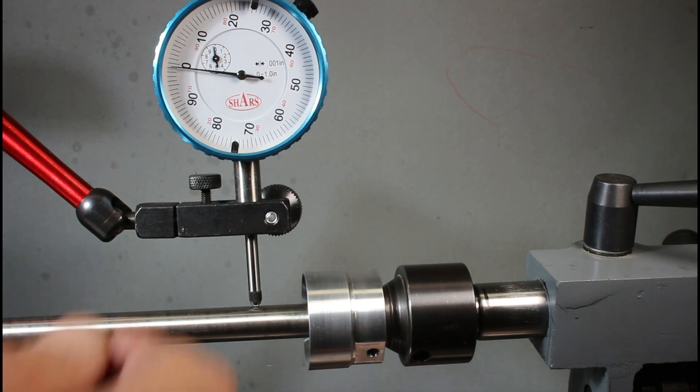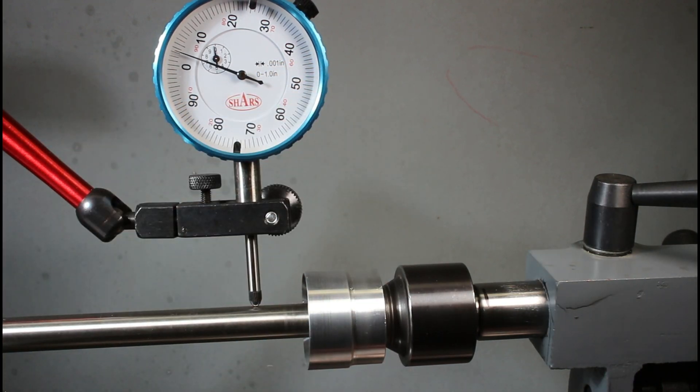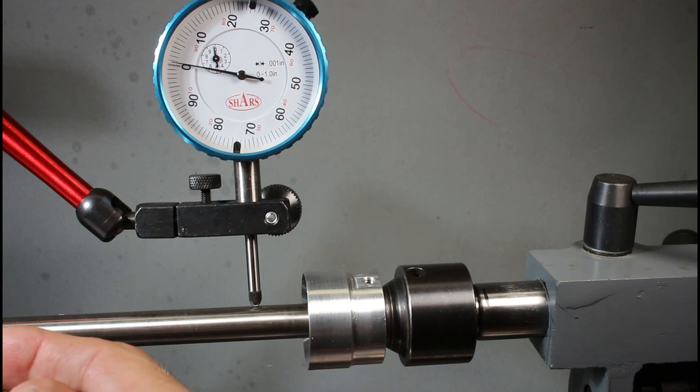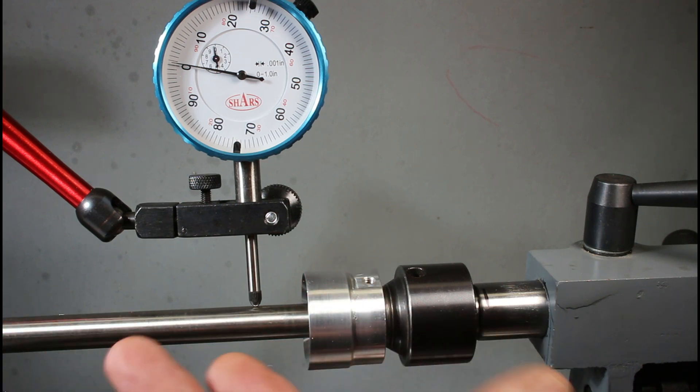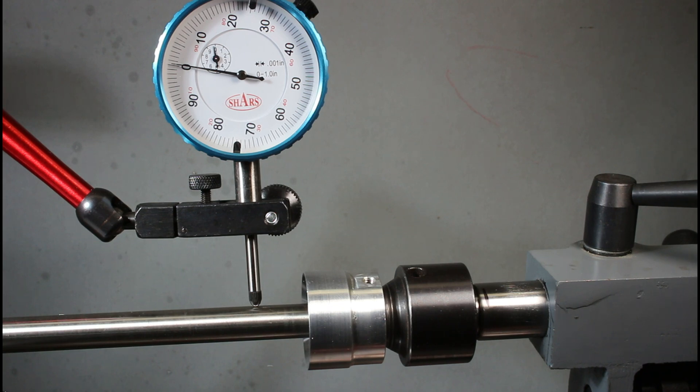That's like four thou, which is acceptable for the level of work that I need to do. And I'm not usually turning right at this end. I'm usually turning at the chuck end. So four thou run out at this end of a 12 inch rod down at that end is almost zero. So I'm fairly pleased with this slight improvement. Now I have another plan for that. So let me go into that.